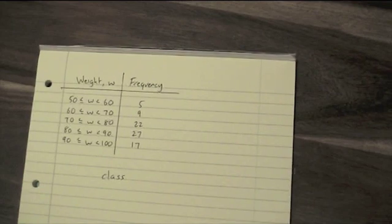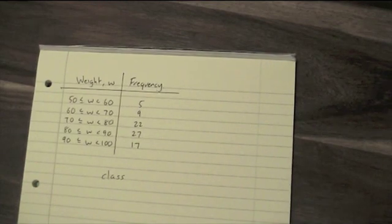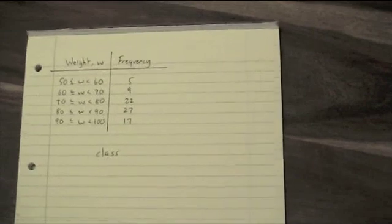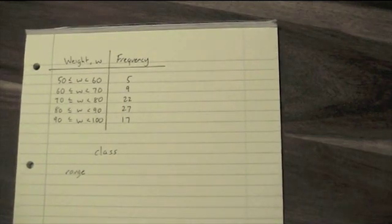You can be asked to work out the range, the modal class, the class containing the median, and an estimate for the mean from these tables. First off, let's look at the range. The range is the biggest value you can have take away the smallest value you can have.